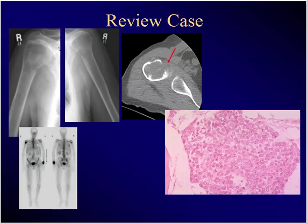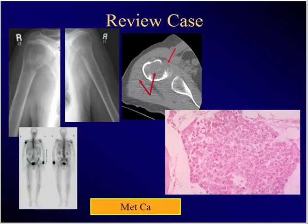65-year-old smoker with shoulder pain — plain film, CT (notice the soft tissue density), and bone scan. This histopath, what's the diagnosis? It's a met. These glandular-looking, epithelial-looking cells — they don't belong there.